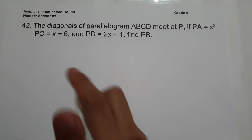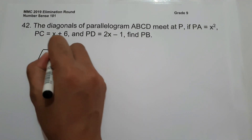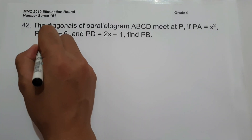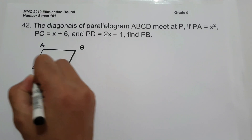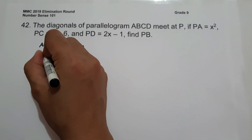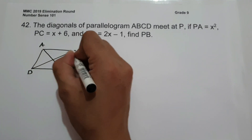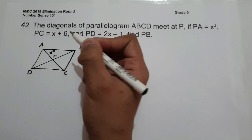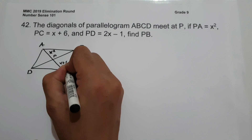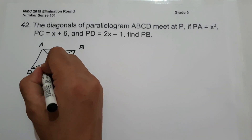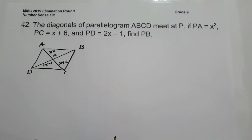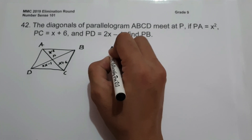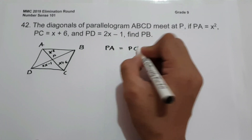Since we have a parallelogram, let us draw a parallelogram. Whenever you name a parallelogram, it should be consecutive: A, B, C, and D. Since we have diagonals meeting at P, the measure of PA is x squared, PC is x plus 6, and PD is 2x minus 1. The first thing we are going to do is equate PA and PC because they are congruent.